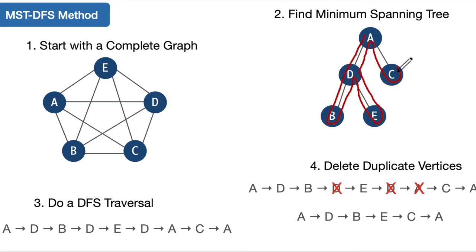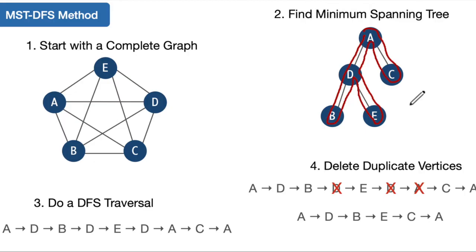Now that we've covered every vertex, we go back to our starting point A. You can see the path we follow using a depth first search traversal of the tree. However, we've covered every edge two times — two times every edge. That's not ideal and not an optimal solution, because we don't want to visit each vertex more than once — we want to visit each vertex exactly once.